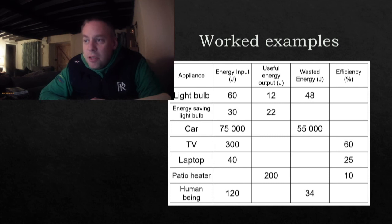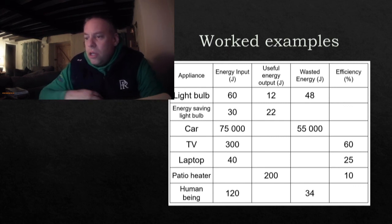So to work this out, the efficiency equals the useful energy, that's 12, divided by the energy input, the total energy, that's 60. So you did 12 divided by 60, and then you times it by 100 to make it a percent, and that will give your efficiency. So you can quickly write down that table and fill out the different numbers, that would be a useful exercise to do.